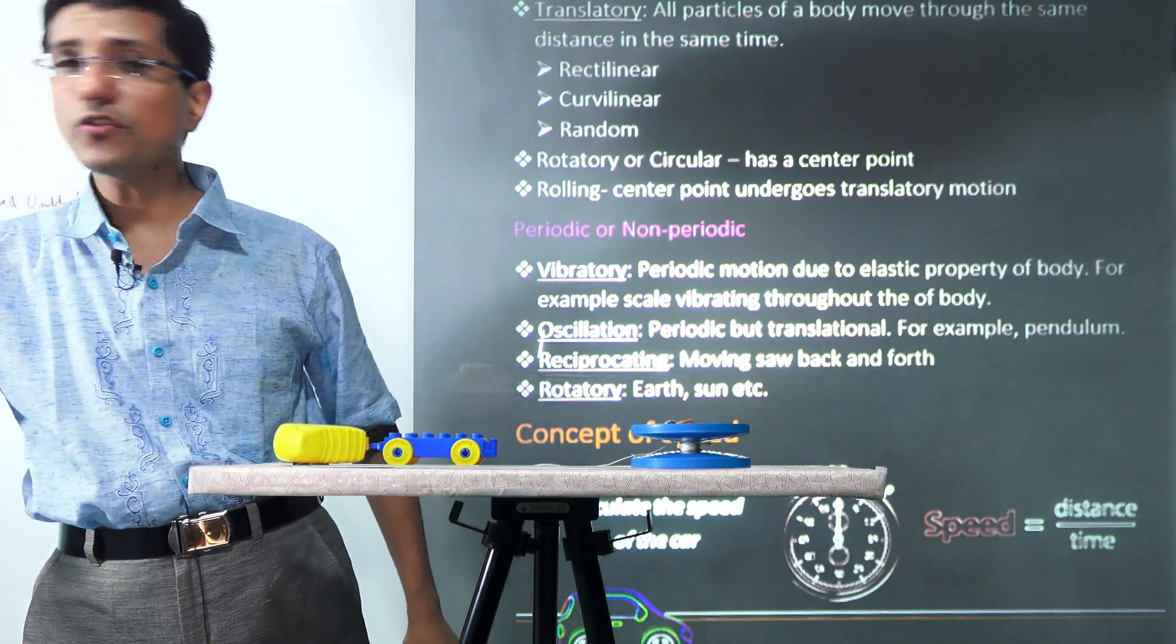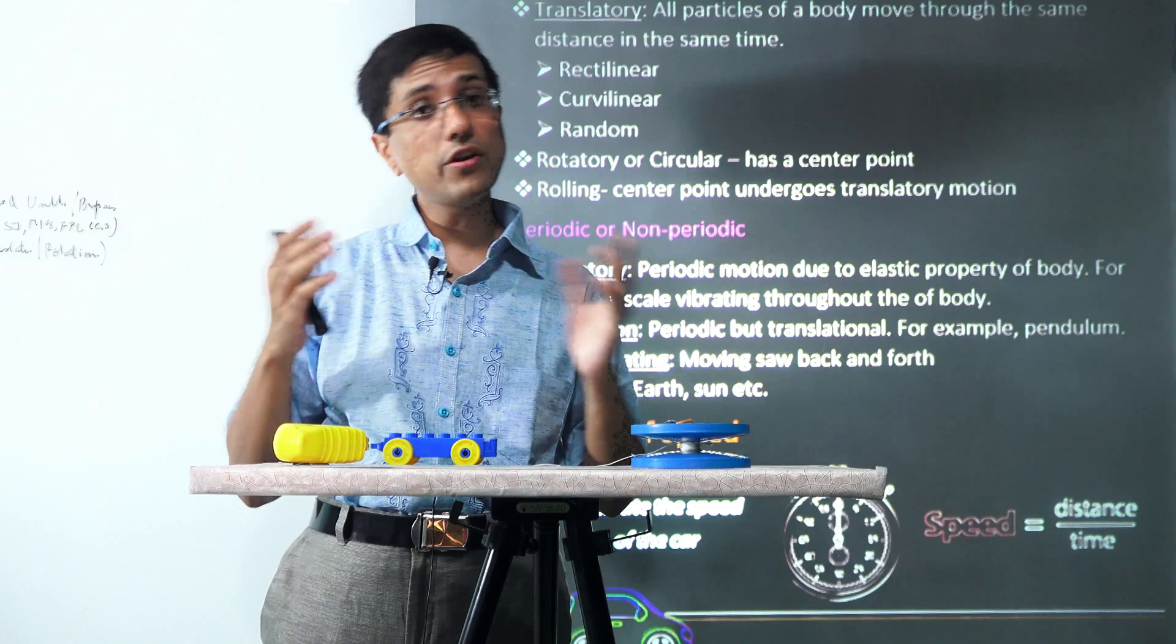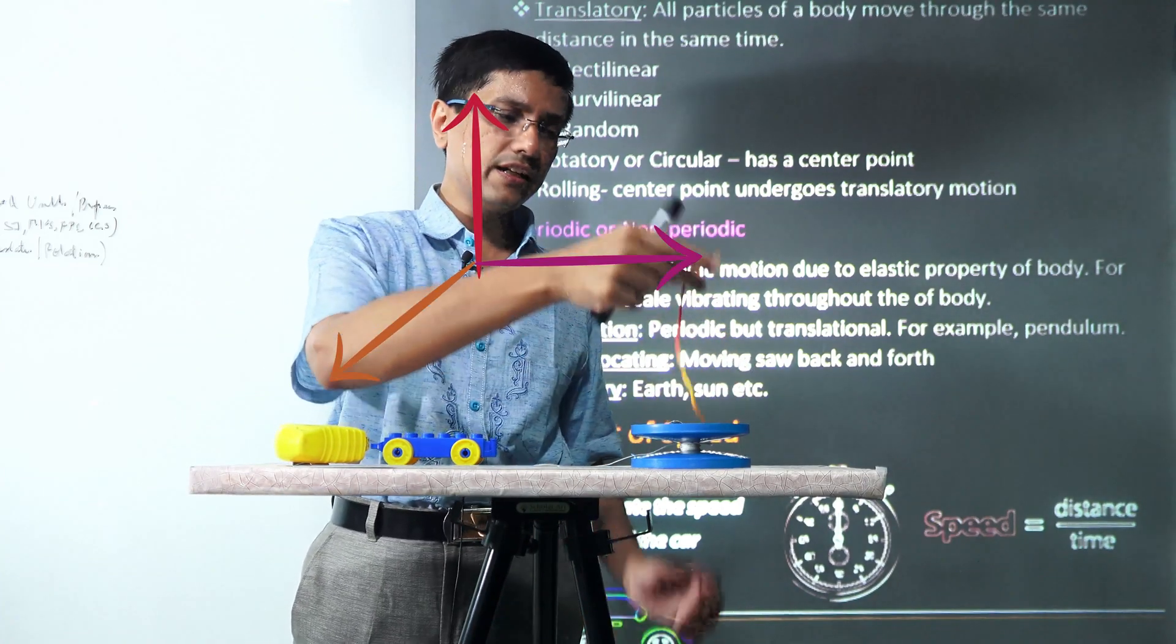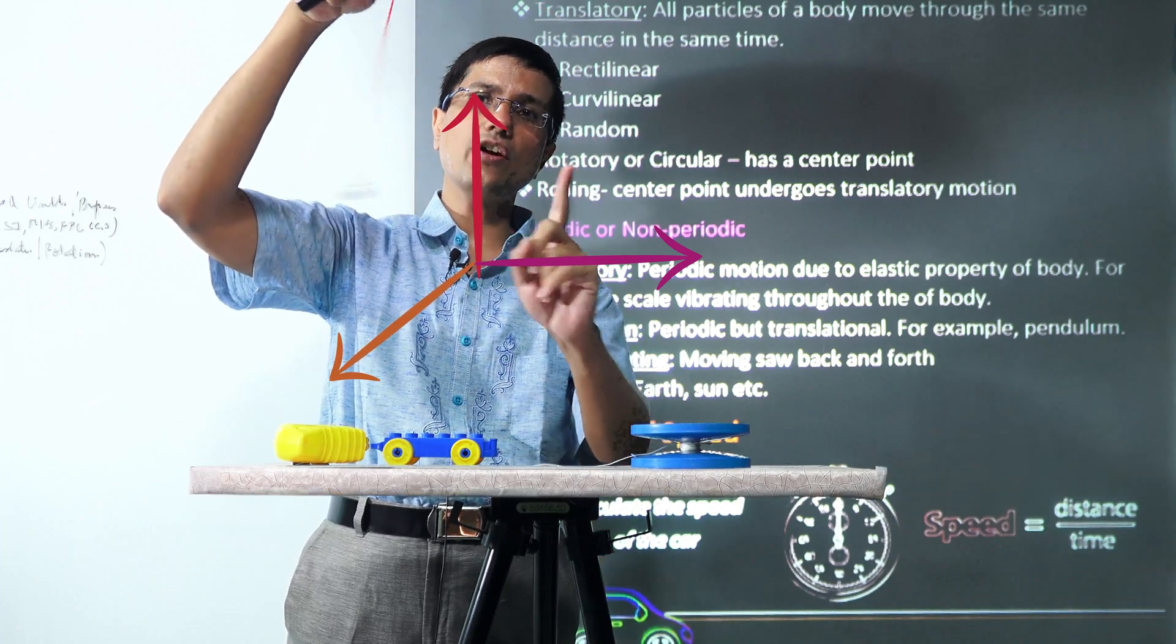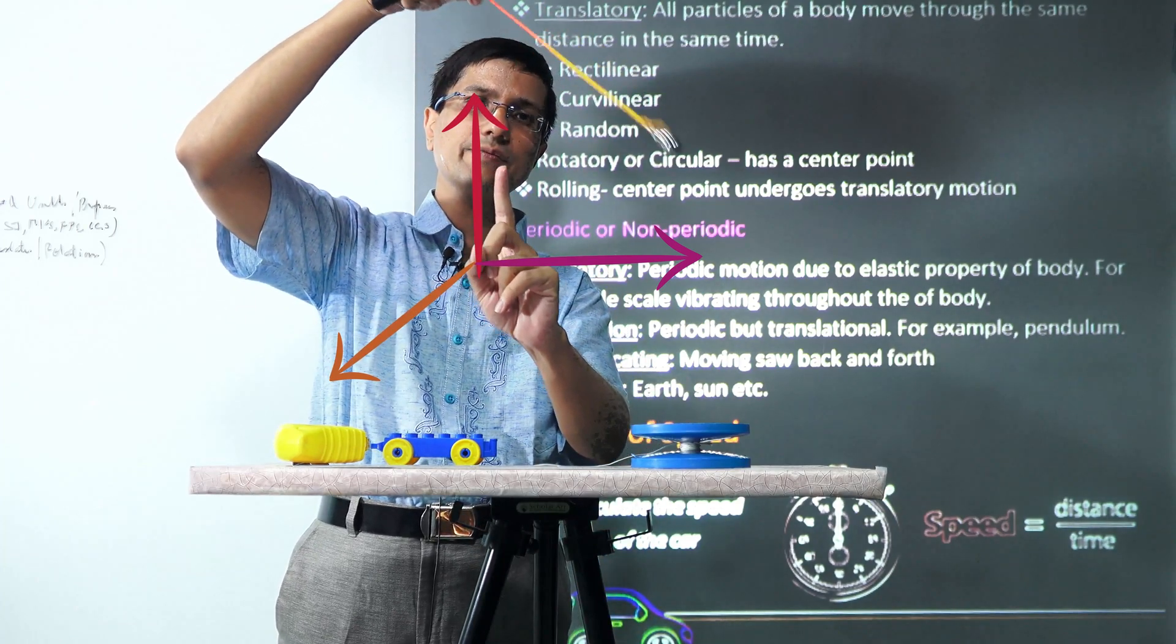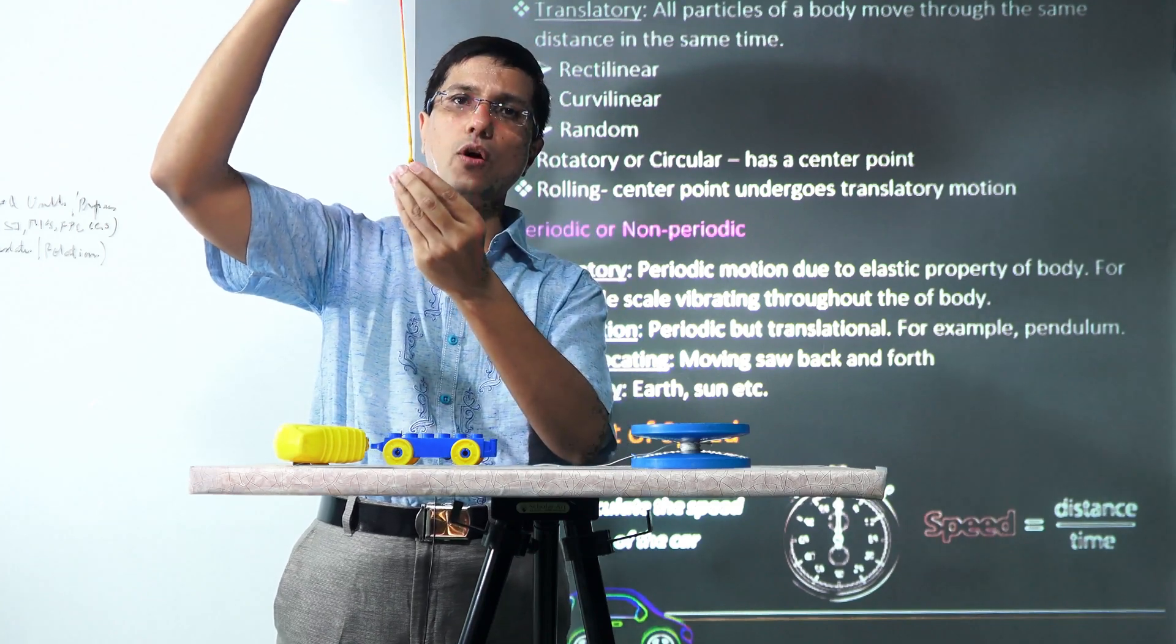When we talk about circular motion, it can be of two types: either rotation or revolution. Revolution happens when the axis around which the thing is moving lies outside the object. This is the axis around which this ball is moving. This is revolution as the axis is outside the ball.